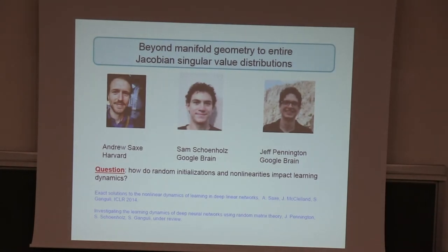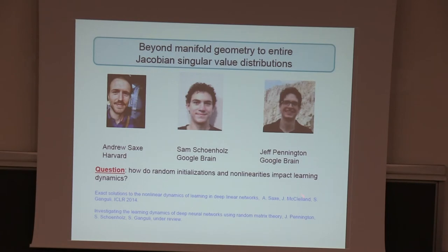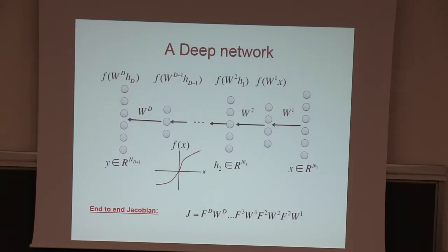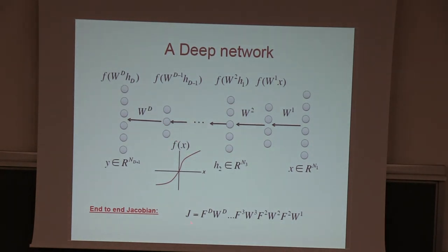Can we exploit what we've learned to achieve a practical result — can we speed up training? How does the initialization and the nonlinearities impact learning? This was joint work done with people at Stanford and at Google Brain. The basic idea: consider the Jacobian, the input-output map, the matrix of partial derivatives of outputs with respect to inputs — it's a product of random matrices at initialization. Ideally when you backpropagate, you'd want this Jacobian to be well-conditioned at least at initialization, without exponentially exploding or vanishing gradients.